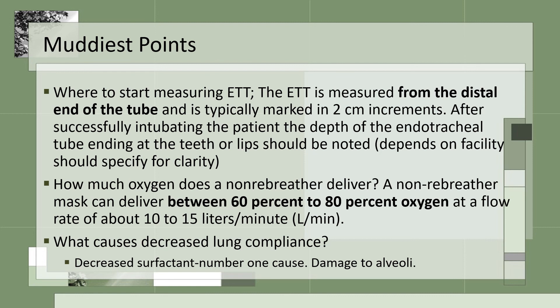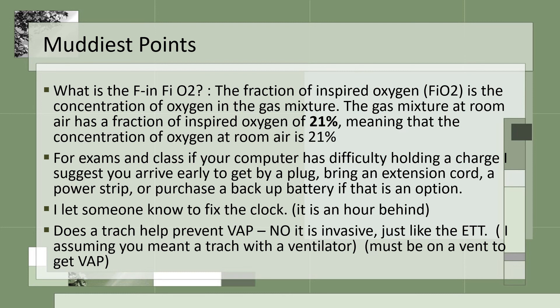What causes decreased lung compliance? Decreased surfactant and damage to alveoli — the alveoli cover the largest surface area of the lungs, so when they are damaged and surfactant is gone, lung compliance decreases. FiO2 stands for fraction of inspired oxygen — the concentration of oxygen in a gas mixture. Room air has a FiO2 of 21%, meaning the concentration of oxygen in room air is 21%.